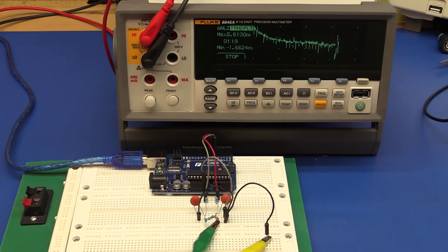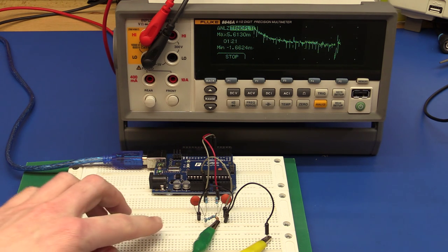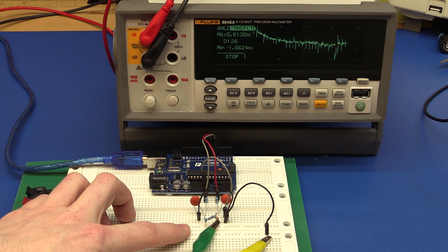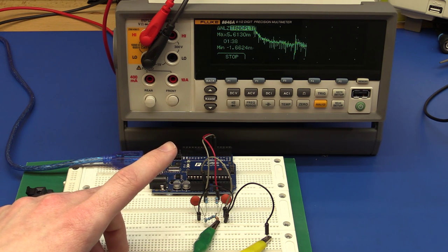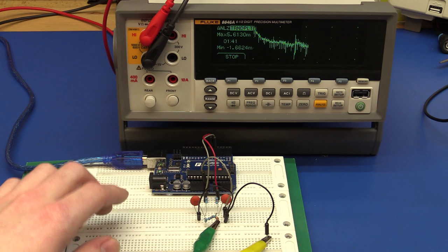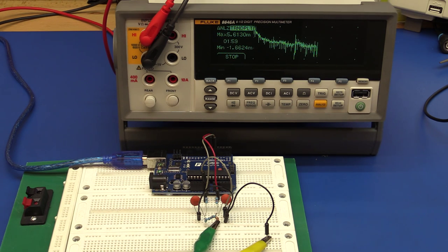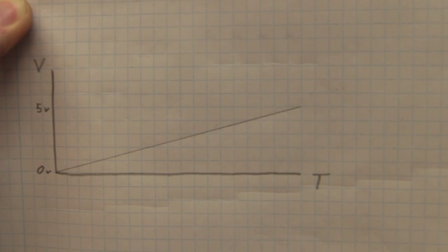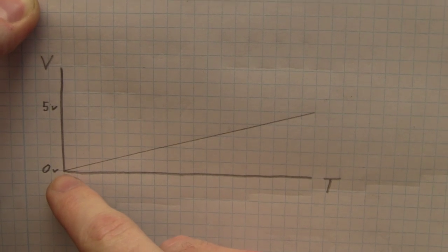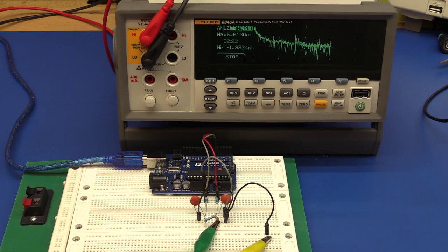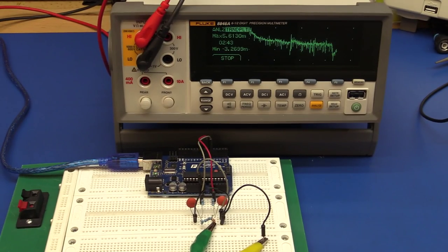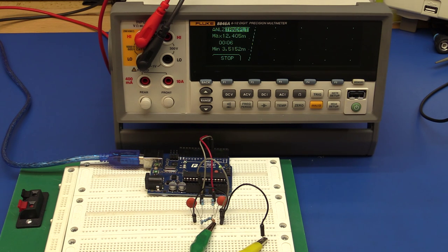I've hooked up the circuit exactly as per the schematic, except I'm using 10 times the resistor values, which shouldn't make a difference. It's hooked up to the Fluke so it can draw a nice graph. What we're looking for is a perfectly linear line that goes in one smooth motion from 0 volts to 5 volts. I've already spoiled the fun - there will be a problem. I'm going to hook up the Arduino and reset the graph. It is starting to ramp up and it looks fine so far.